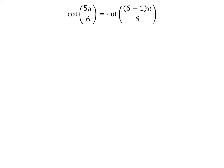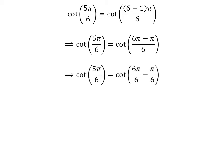We know 6 minus 1 is equal to 5, so cotangent of 5 times pi upon 6 is equal to cotangent of (6 minus 1) times pi upon 6. Expanding the numerator, we get cotangent of 6 times pi minus pi upon 6. The fraction 5π/6 can be expressed as the difference of two fractions: 6 times pi upon 6 and pi upon 6. Cancelling out the common factor gives us cotangent of 5 times pi upon 6 is equal to cotangent of pi minus pi upon 6.